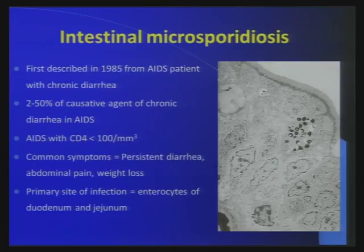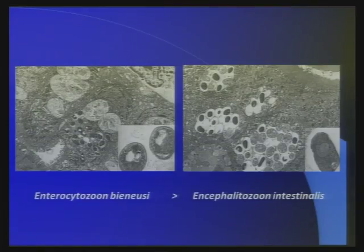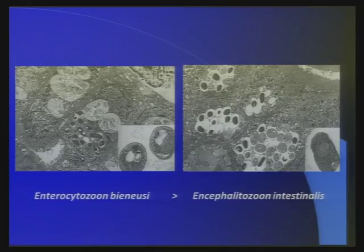Very, very low CD4 count. It infects intestinal epithelial cells, usually in the duodenum and jejunum. You can see that this is the epithelial cell, and this is the nucleus. This is a group of spores forming over the nucleus, and then it latches later. These are Enterocytozoon bieneusi and Encephalitozoon intestinalis — two species causing intestinal microsporidiosis.